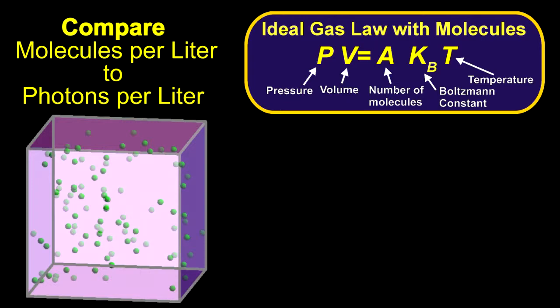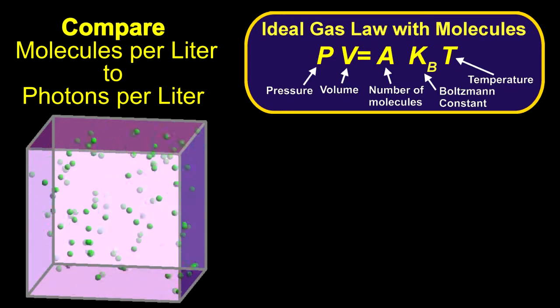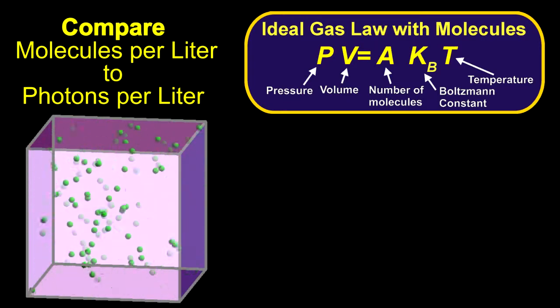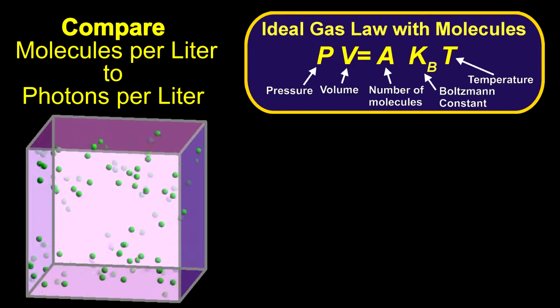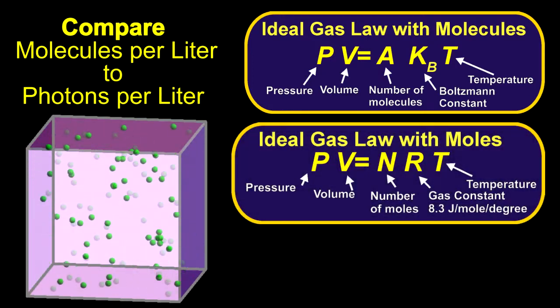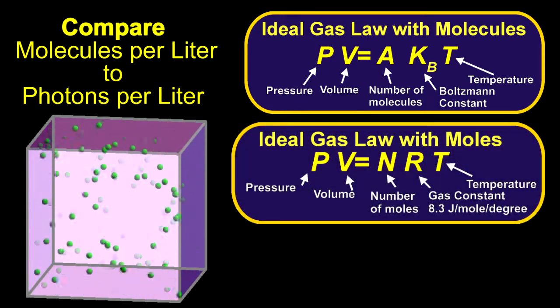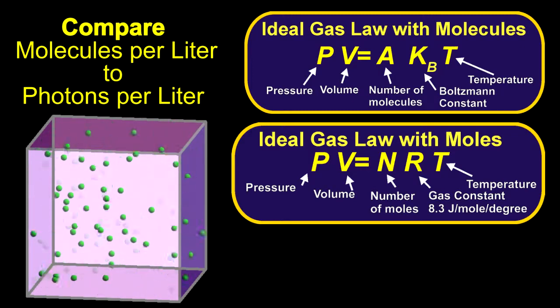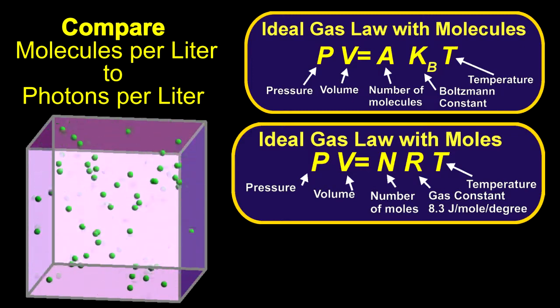When it was originally formulated in the 1800s, they weren't sure that atoms and molecules even existed. They developed a similar law that doesn't count molecules but uses moles instead. That law reads PV equals NRT.